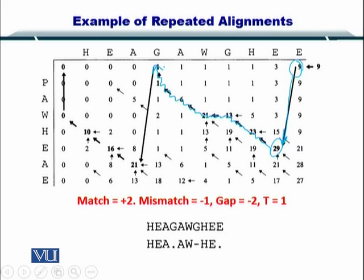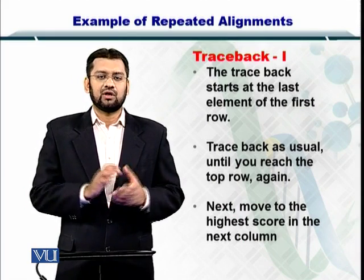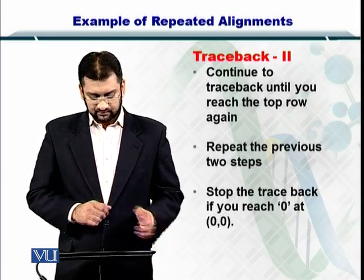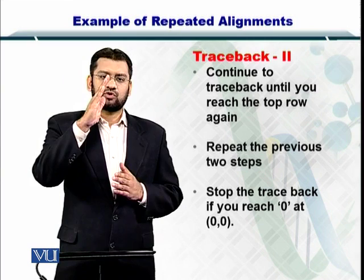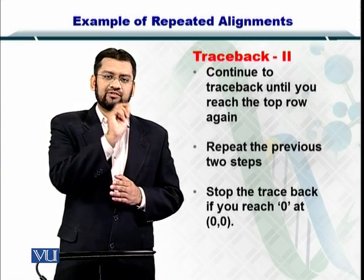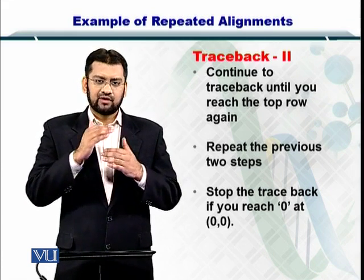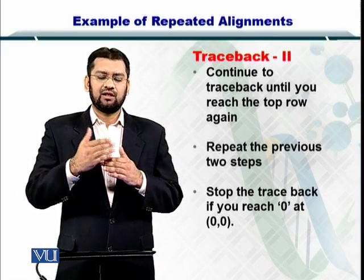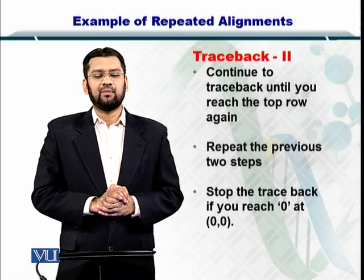Next we're going to evaluate how we're going to proceed to the columns before that. We repeat these two steps, that is we reach till the top row and then we jump to the previous column by selecting the maximum score in the previous column. We repeat this process until we reach the (0,0) in the (0,0) position of the alignment matrix.